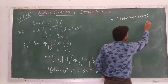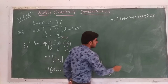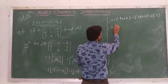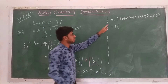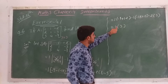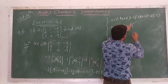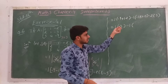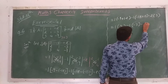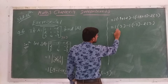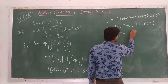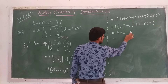Now simplifying: the first bracket gives -9 minus (-12) = -9 + 12 = 3. The second bracket: minus 1 times (-18 + 15) = minus 1 times (-3). Here 18 - 15 = 3, but 18 is negative so the answer is -3. The third part: minus 2 times (8 - 5) = minus 2 times 3 = -6. So the final answer is 3 + 3 - 6 = 6 - 6 = 0.